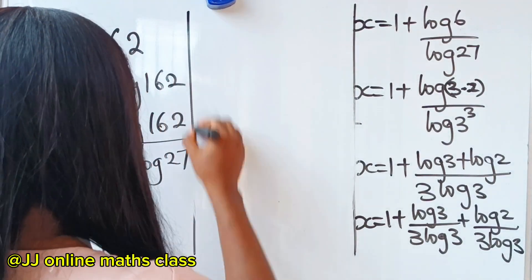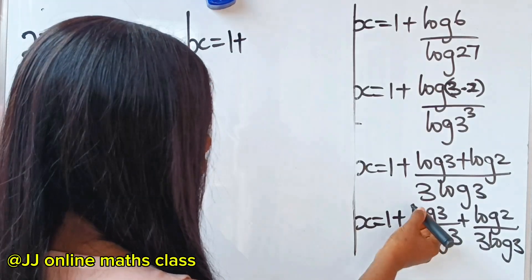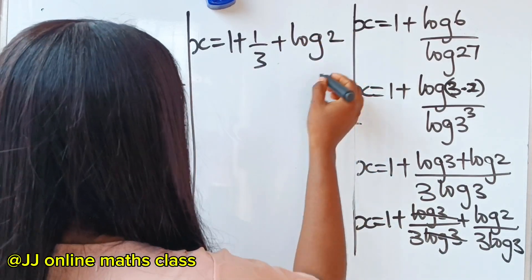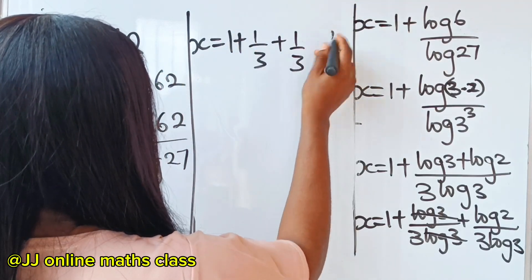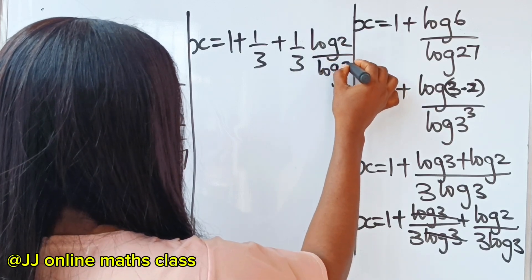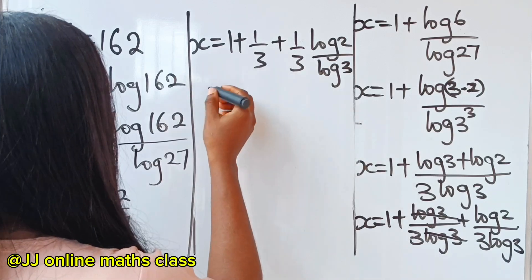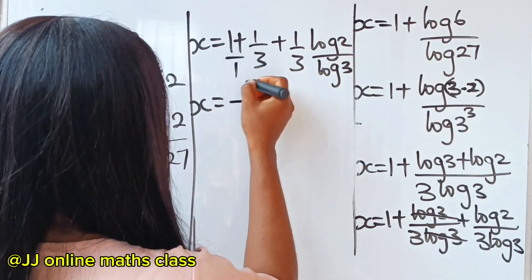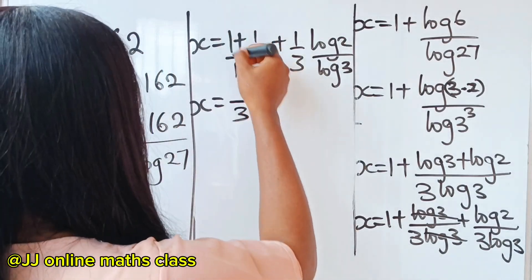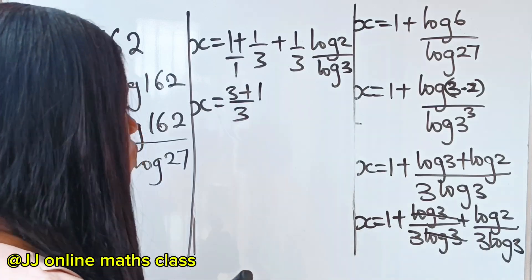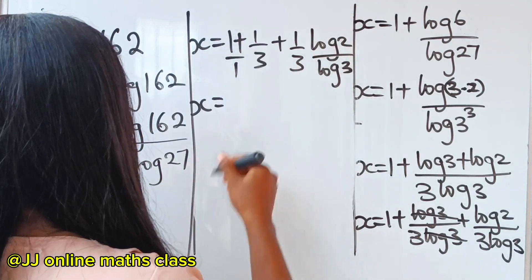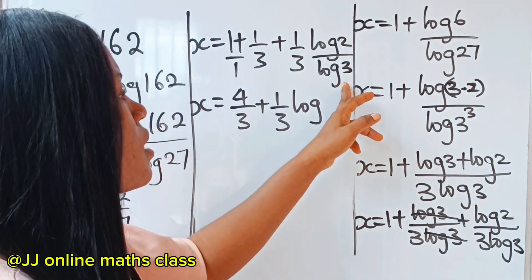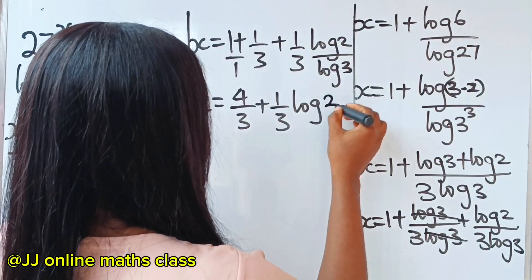From here, x equals 1 plus log 3 over 3 log 3, which simplifies to 1 over 3, plus log 2 divided by 3 log 3 — which is 1 over 3 multiplied by log 2 divided by log 3. Adding 1 plus 1 over 3 using the butterfly method with LCM 3 gives us 4 over 3. And log 2 divided by log 3 can be rewritten using the change of base formula as log base 3 of 2. So x equals 4 over 3 plus 1 over 3 times log base 3 of 2.